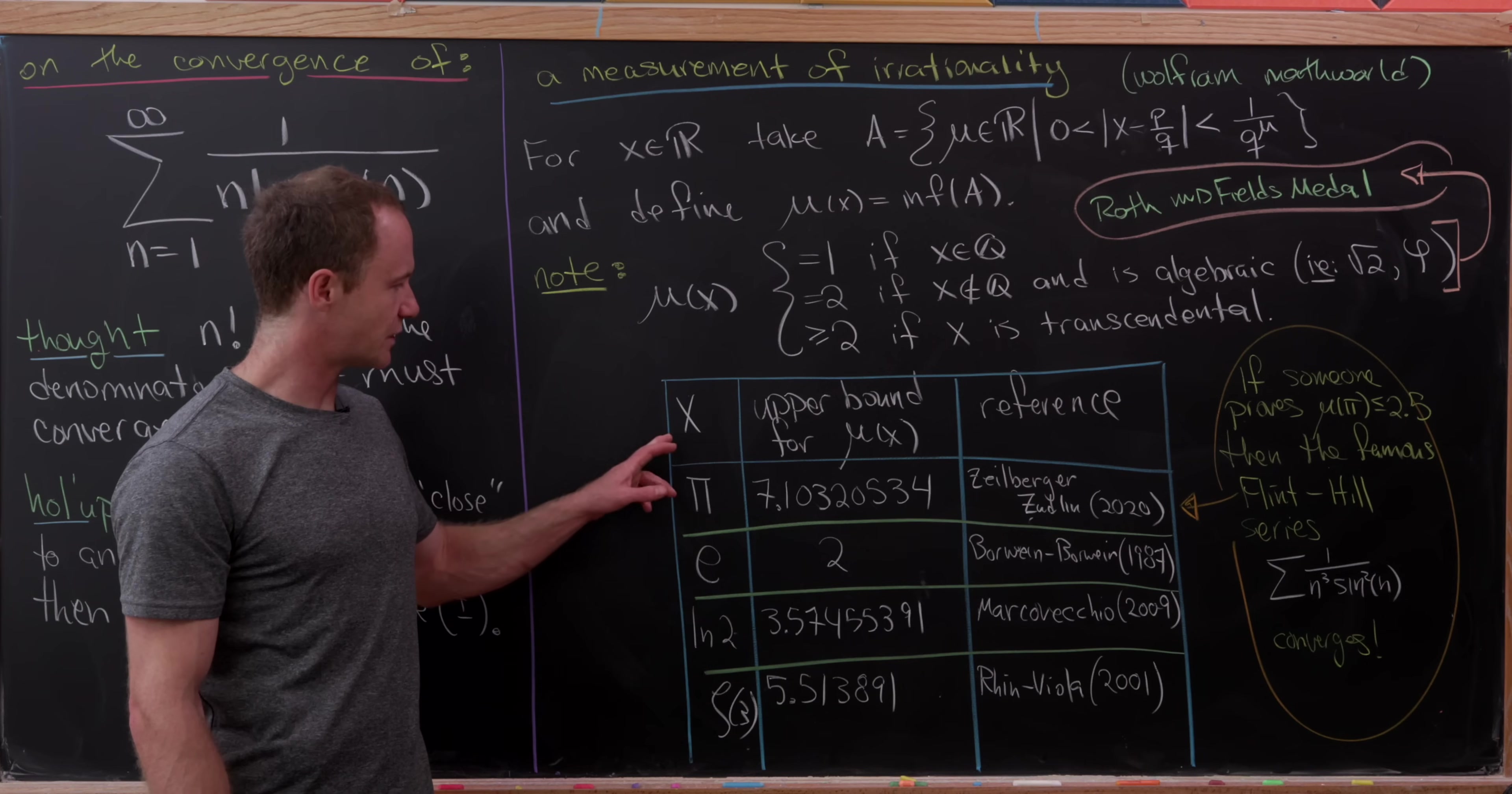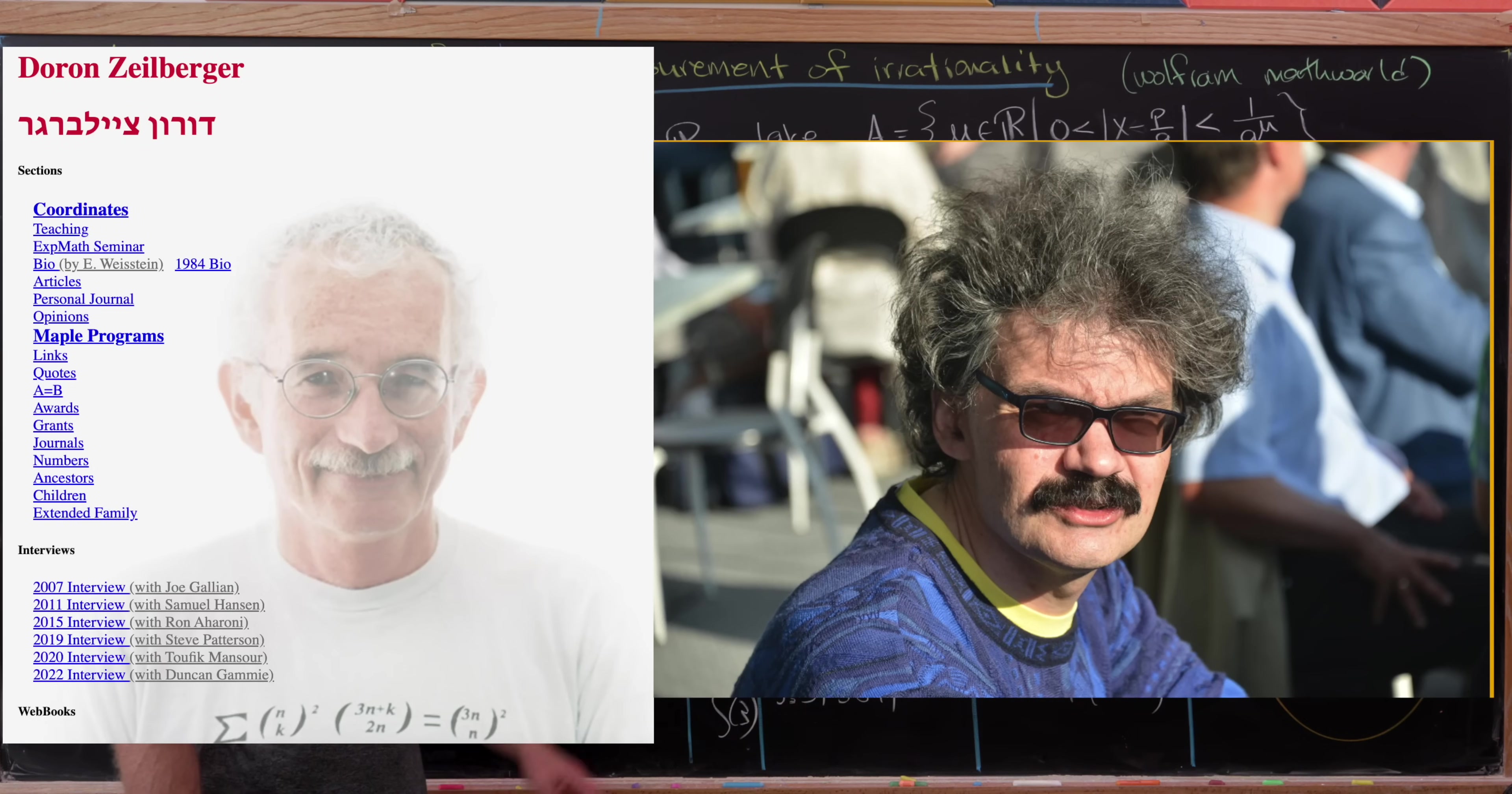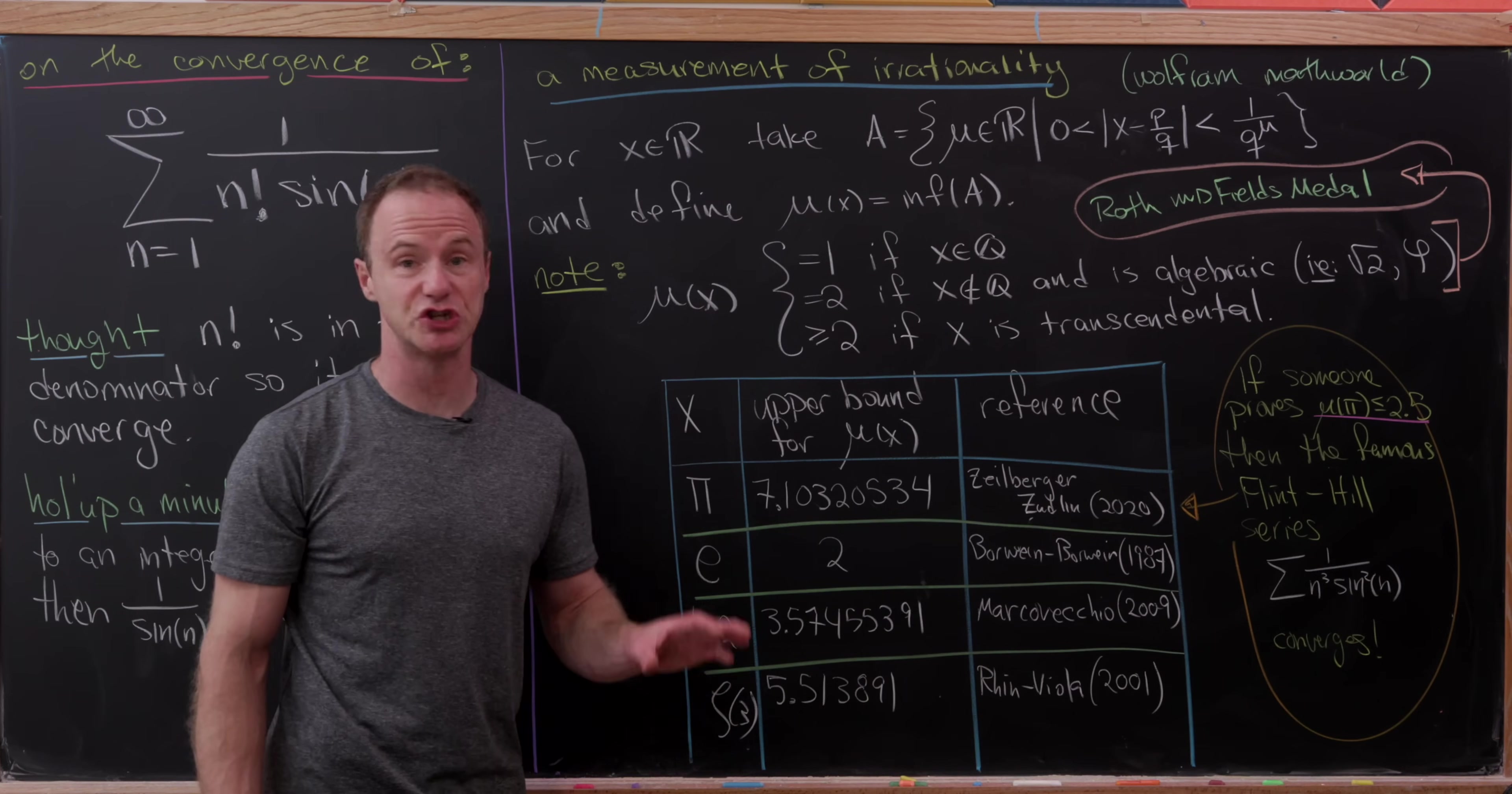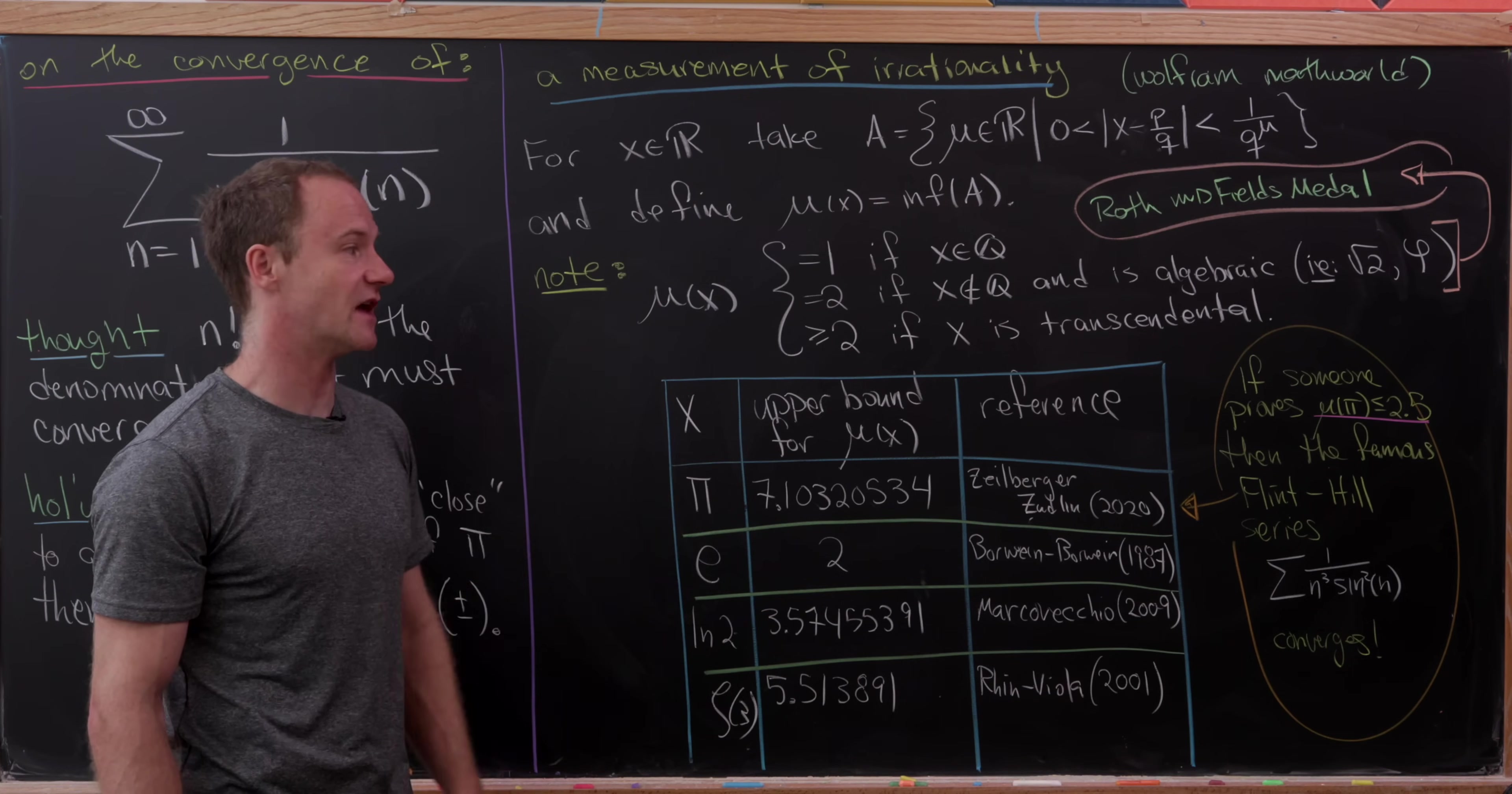Here are some examples. For pi, the upper bound for mu of x is 7.10320534, by Zeilberger and Zudlin from 2020. The irrationality measure of pi is related to a famous series. If someone proves that mu of pi is less than or equal to 2.5, then the famous Flint Hills series, the sum of 1 over n cubed times sine squared of n, actually converges. It's thought that this does converge, but it would require a big decrease in the upper bound for mu of pi.